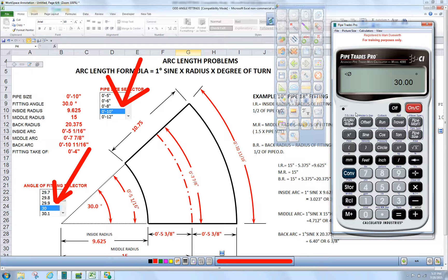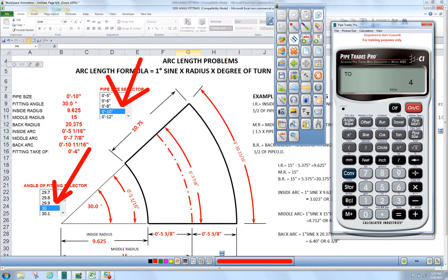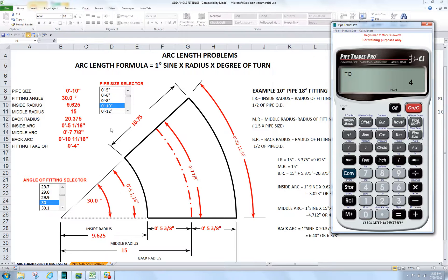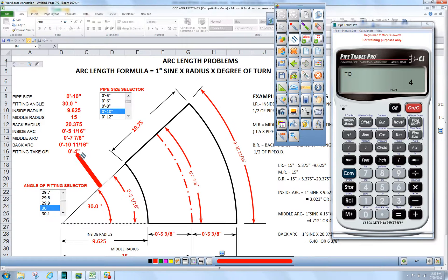Above the angle slope key is takeoff and arc. To get that activated, we press convert angle slope. That confirms that our fitting takeoff is 4 inches, as you can see.